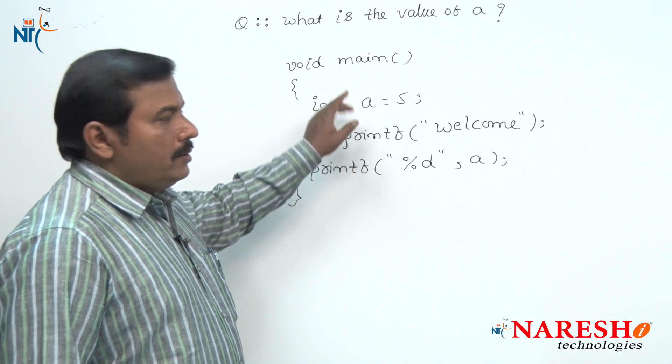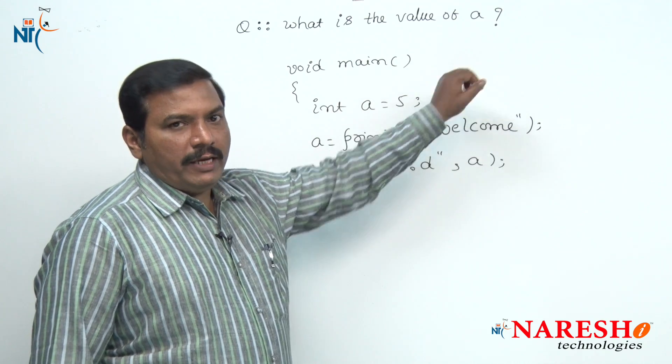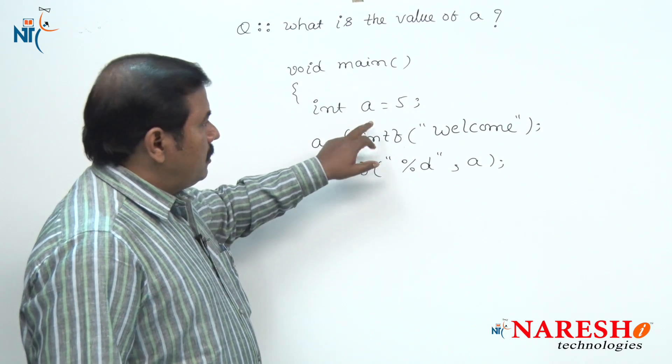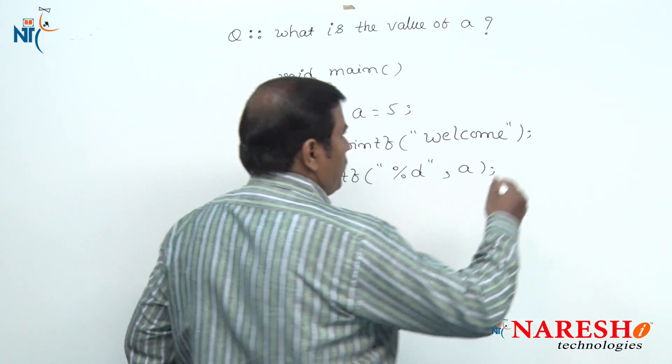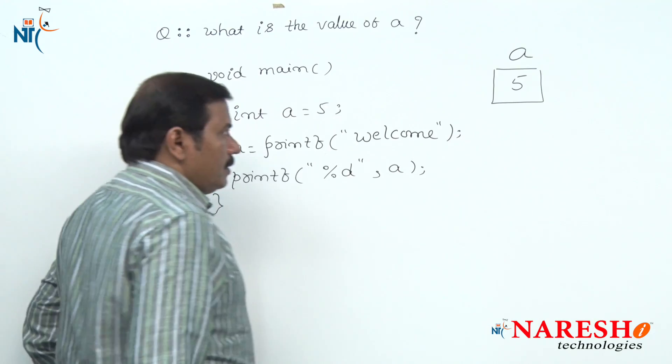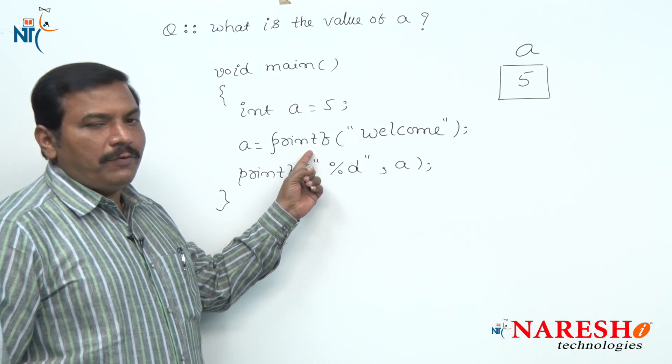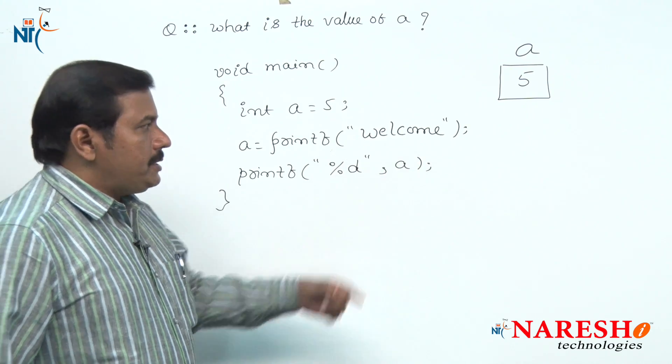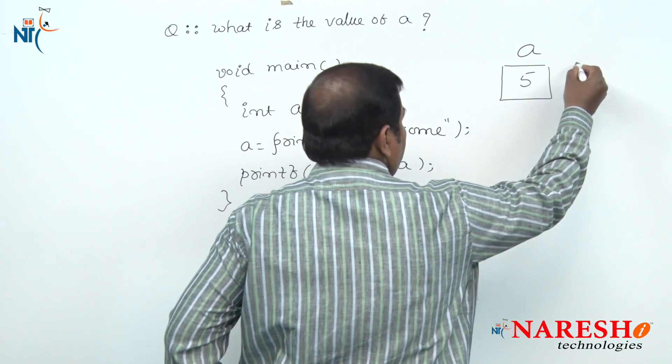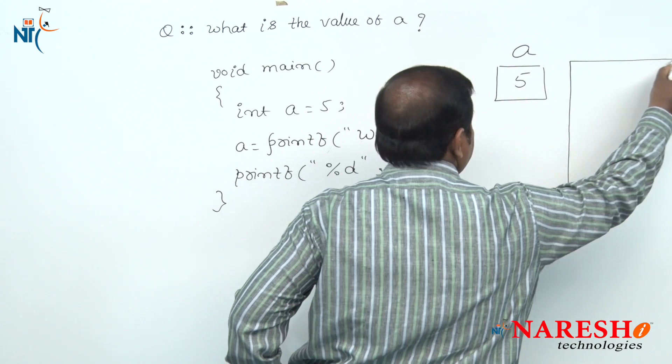Let us watch this question: what is the value of A? In this code, the initial value of A is given as 5, and in the second statement the printf function displays the string welcome onto the screen as it is.